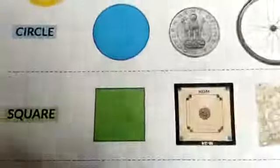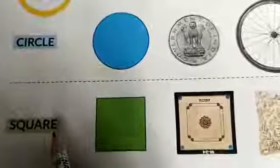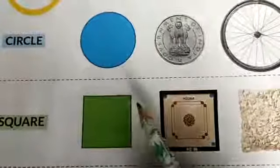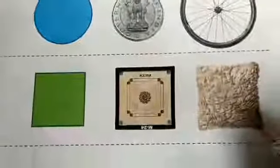Next, S-Q-U-A-R-E square. This is the square shape. Four sides are equal. For example, carom cushion.